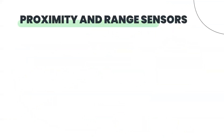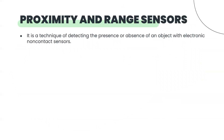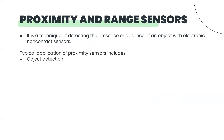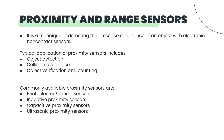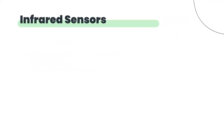Now we discuss proximity and range sensors. The basic idea is to detect some kind of obstacle or object without any contact. Typical applications include object detection, collision avoidance, object verification, and counting. Commonly used proximity sensors include photoelectric sensors, inductive proximity sensors, capacitive sensors, and ultrasonic sensors. First we'll discuss infrared sensors.